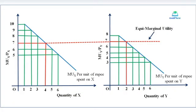Second case: consumer equilibrium with two commodities. When the consumer has a limited income and faces market prices, they distribute their income between two commodities such that the marginal utility per rupee spent on each commodity is equal.